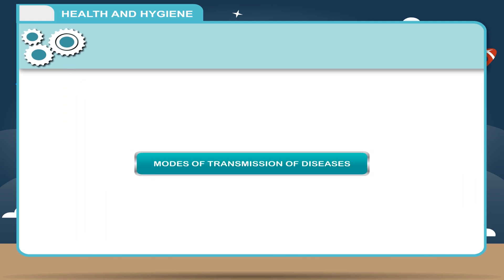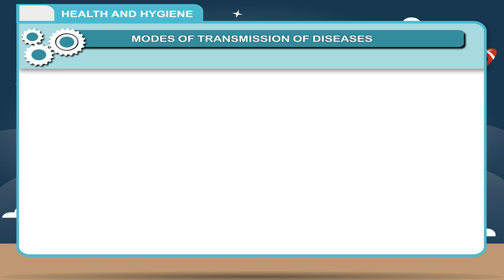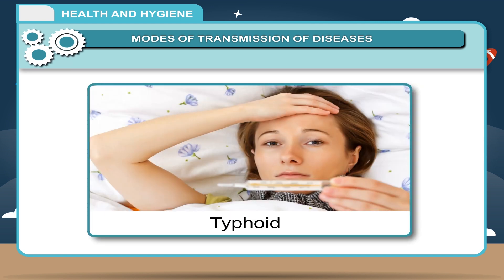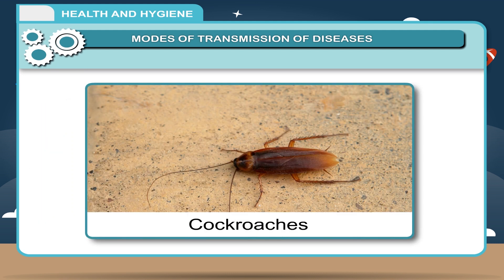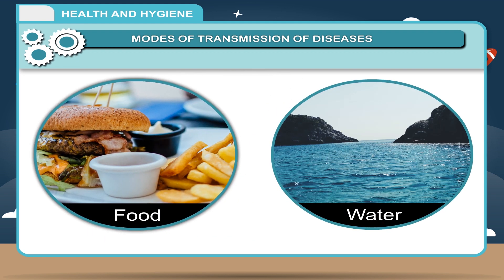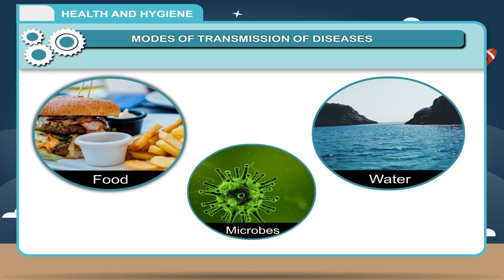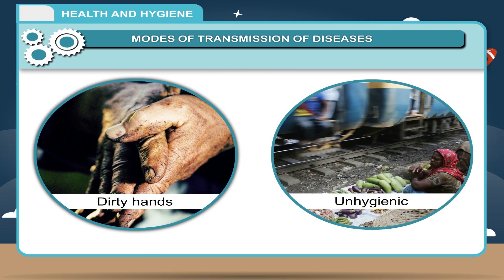Modes of Transmission of Diseases: Communicable diseases may be transmitted through the following methods. Water and Food: Diseases like cholera, dysentery, typhoid and jaundice spread through infected water and food. Flies, rats, cockroaches etc. can infect food and water with harmful microbes. Food and water also get infected when handled with dirty hands or kept in unhygienic conditions. When people eat or drink this infected food and water, the germs enter their body and cause disease.